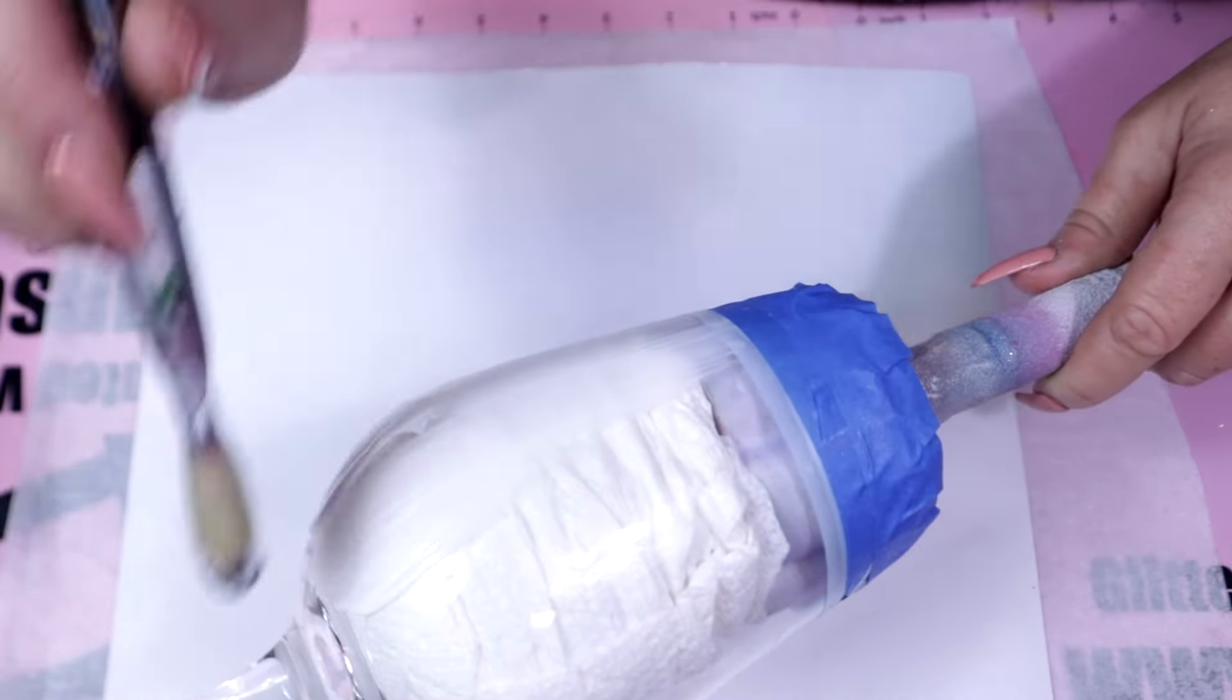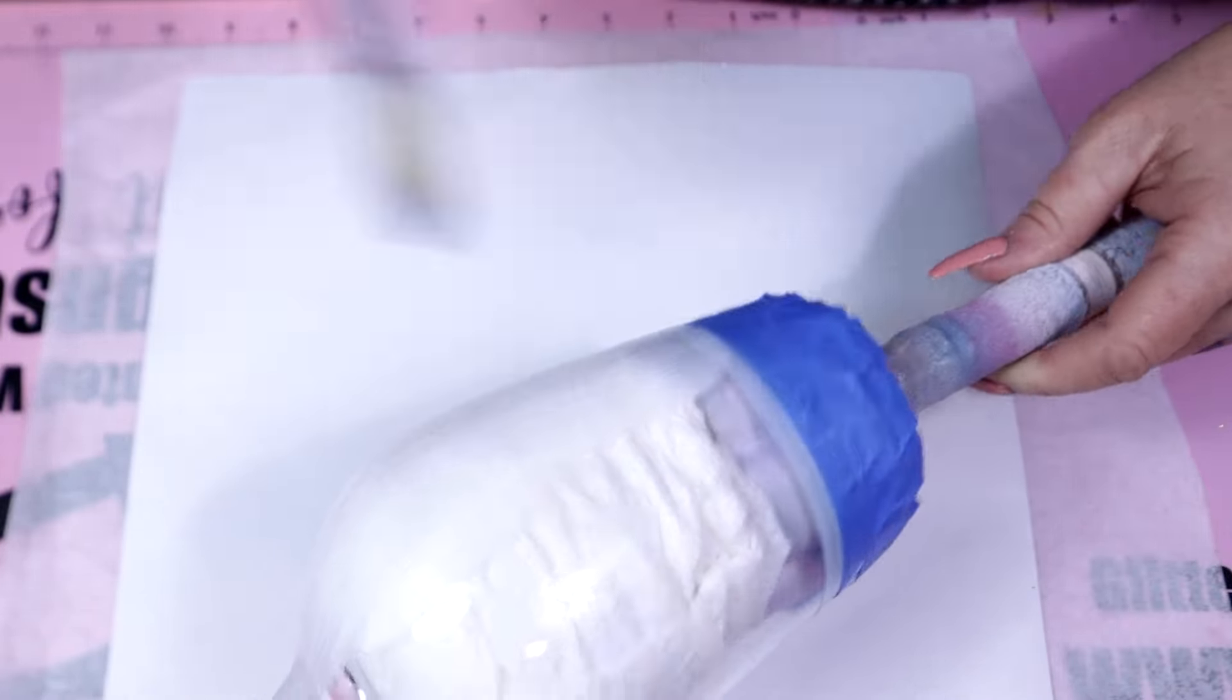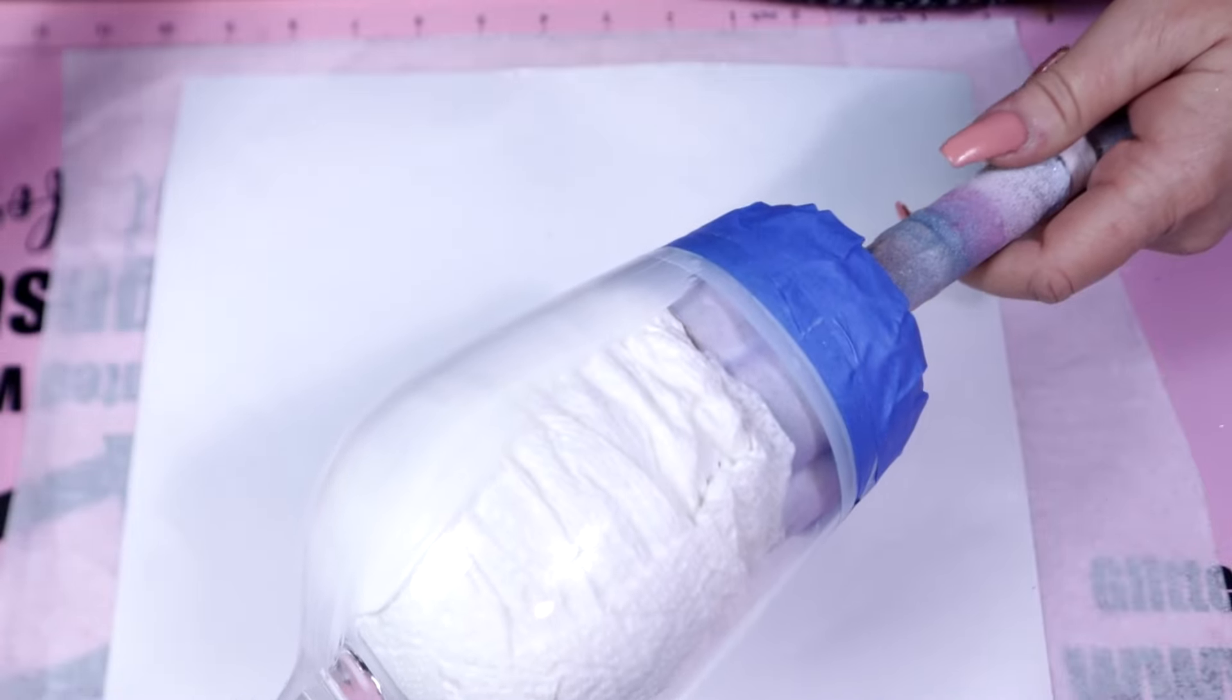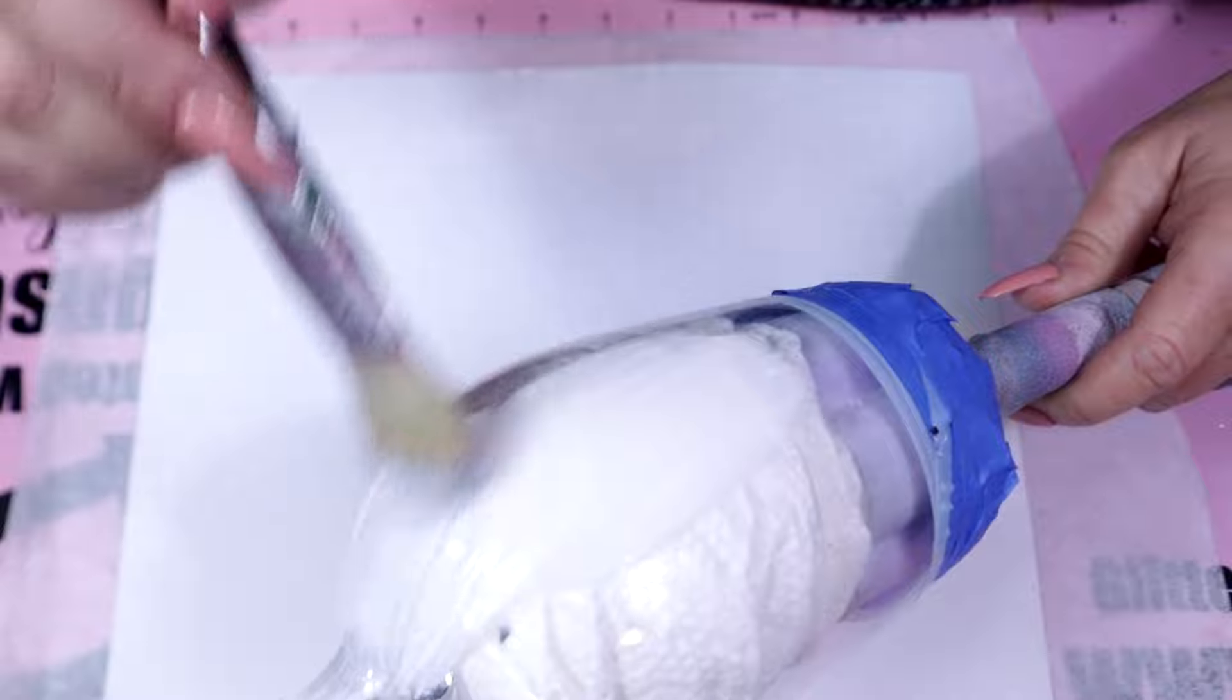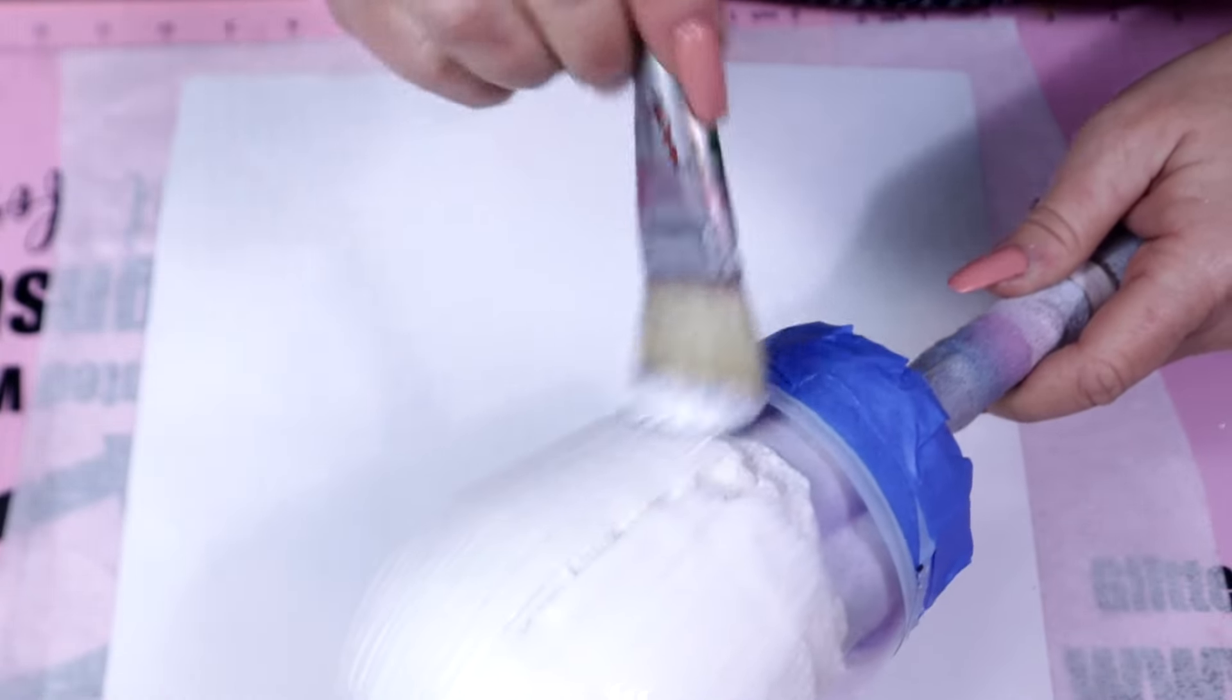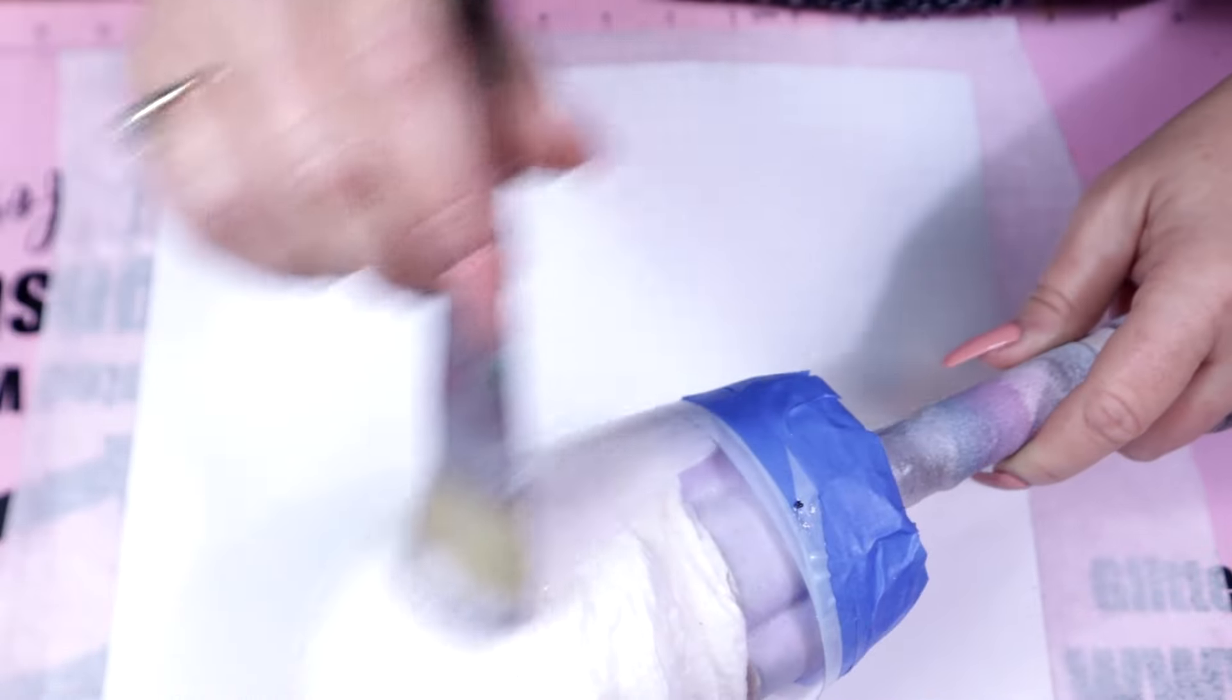When I did the first coat with Mod Podge, I completely covered it, glittered it, allowed that to dry, and then I used clear seal from Rust-Oleum, sealed it, reapplied glitter, let that dry, and then I went back in, sealed it again before the first coat of epoxy.